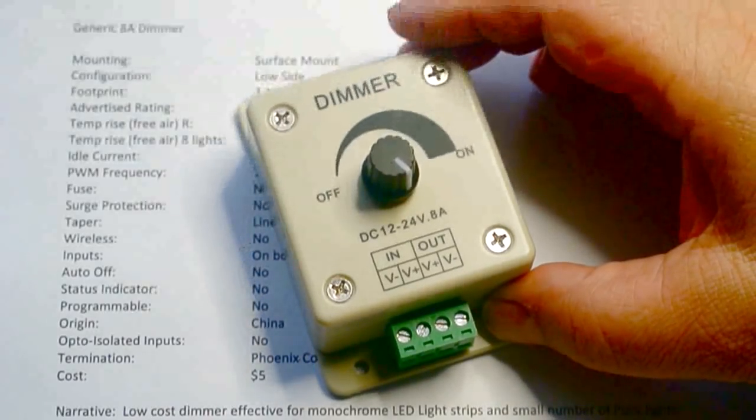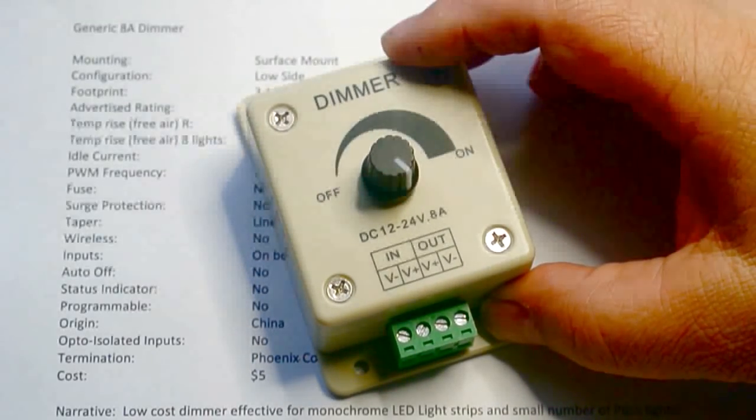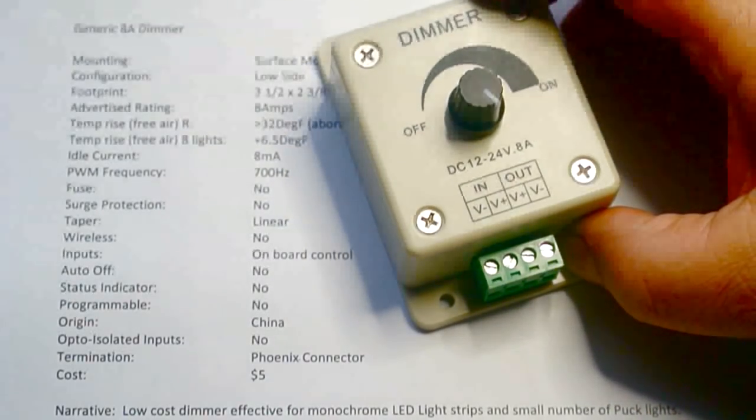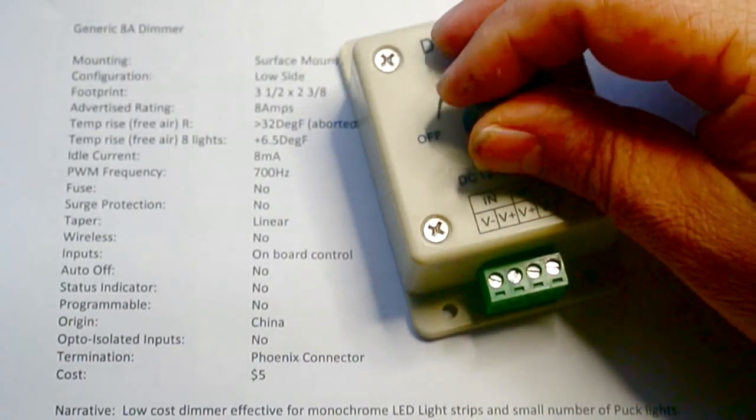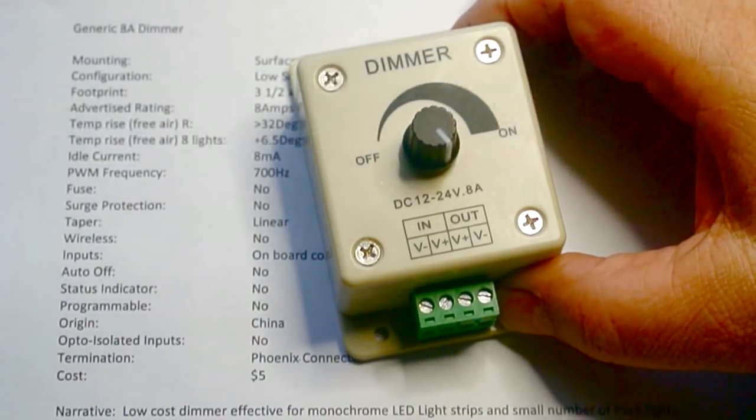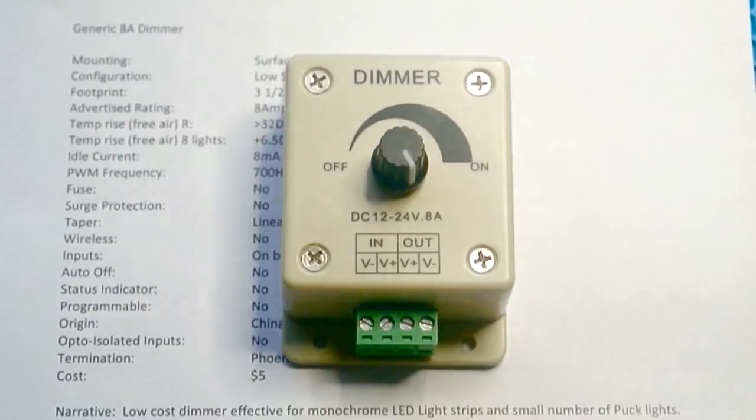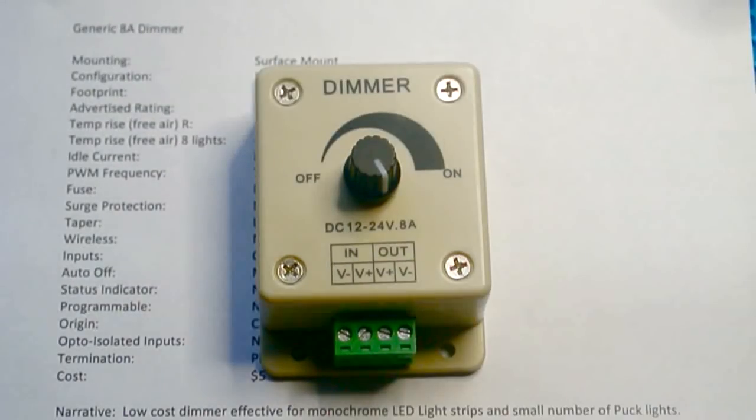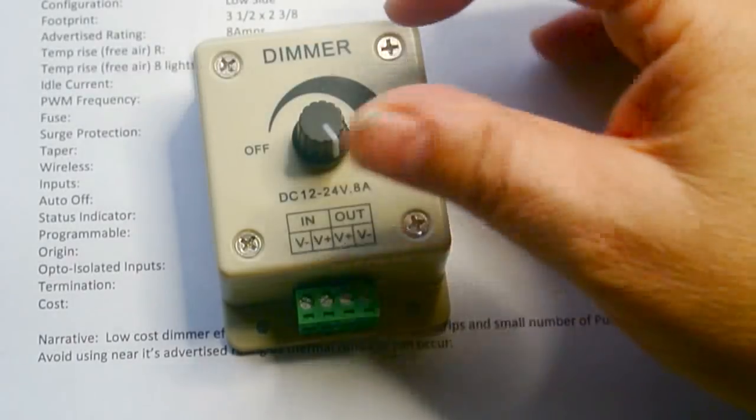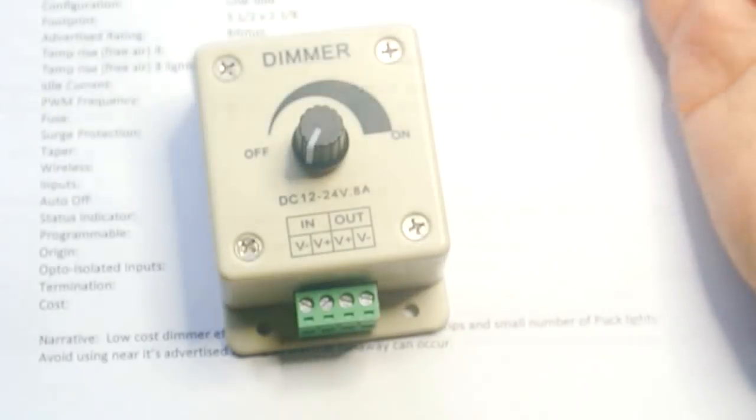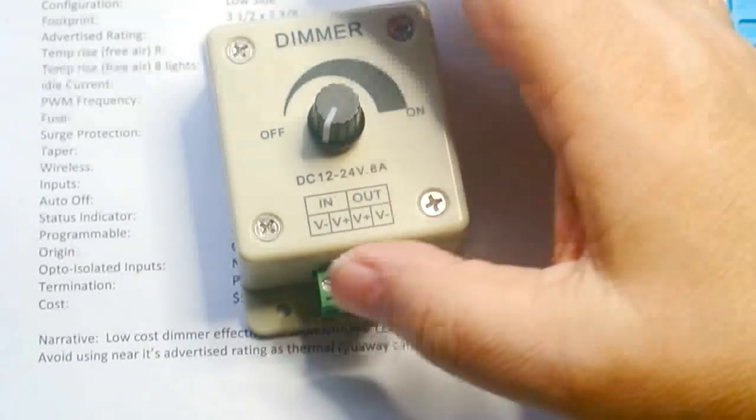This is a generic eight amp dimmer. It's a low side dimmer. It has a PWM frequency of 700 Hertz. It has a linear taper like most do. Made in China, and it's just a basic dimmer. It has Phoenix connector on it. Costs around $5 on Amazon, eBay and such. And it'll work, especially if you have small loads such as an LED strip. When you turn it completely off, it is still powered on. So the idle current is around eight milliamperes.